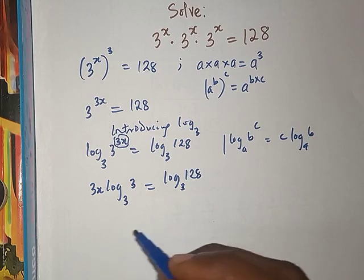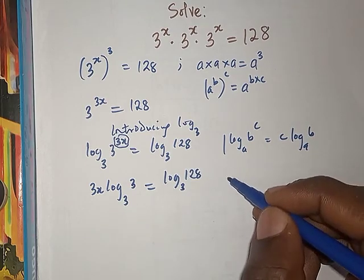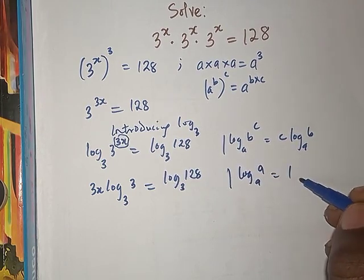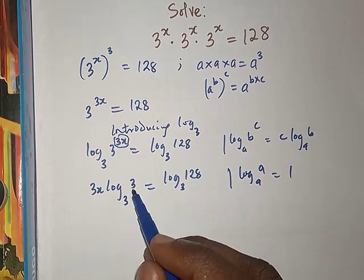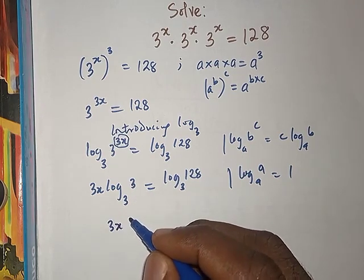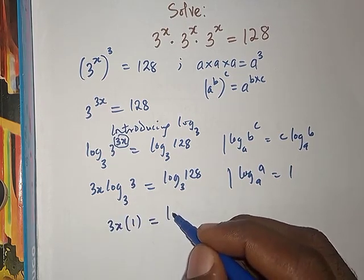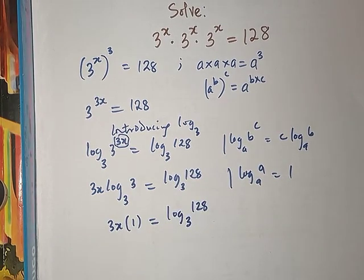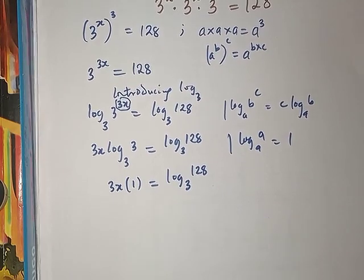Now from there you can see that when you have log base a of a, this will give us 1. Therefore log base 3 of 3, that will be 3x multiplied by 1, equals log base 3 of 128. Are you following?